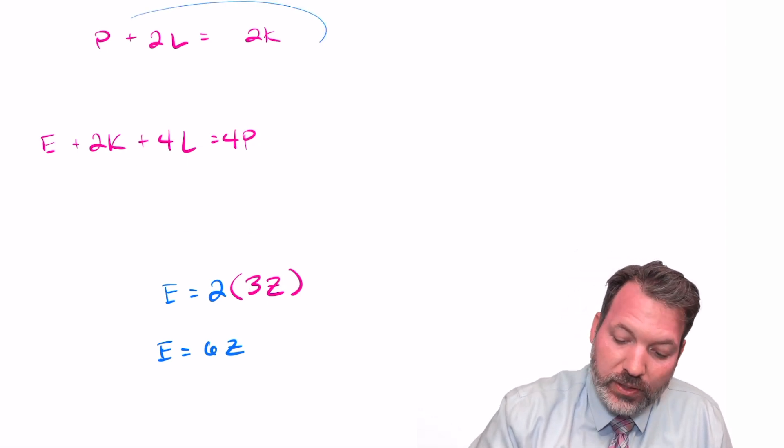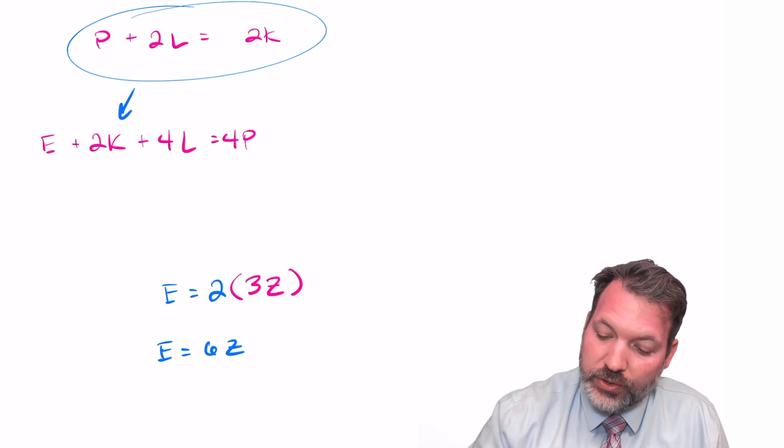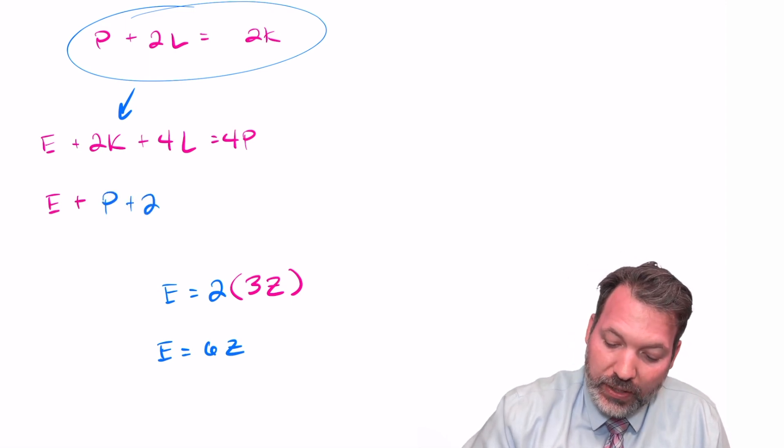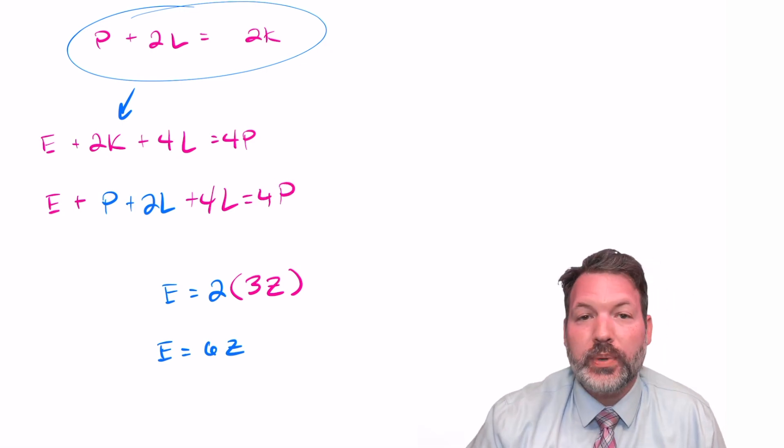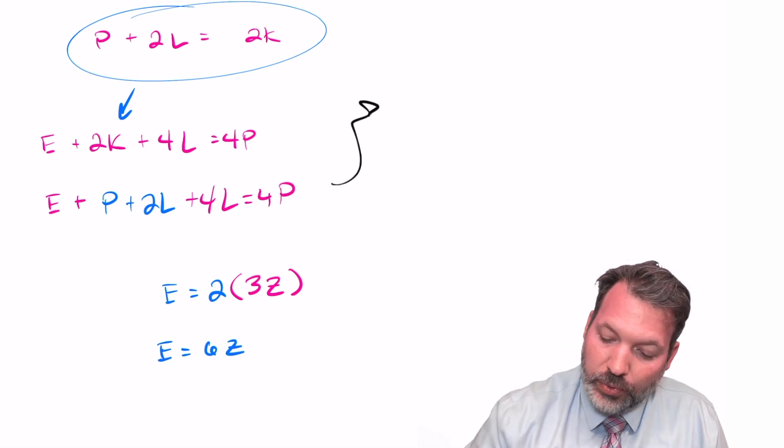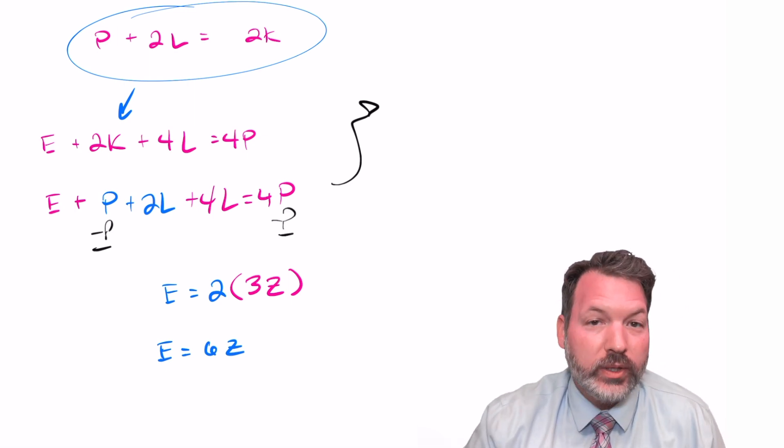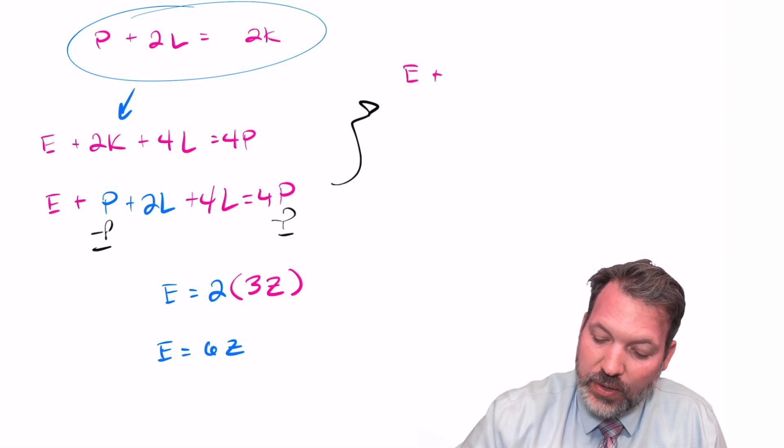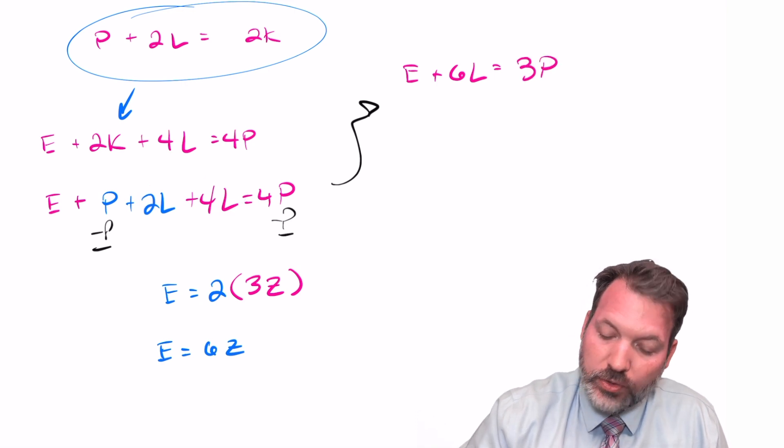From there, no big surprise, we're going to use substitution again. We know now what two K is equivalent to. And so we can rewrite that second equation as E plus not two K anymore, but P plus two L plus four L and say that that's equal to four P. We can simplify this a little bit, not least by subtracting one of those P on each side of the equation right now, once again using the subtraction property of equality. And that lets us say E plus six L is equivalent to three P.